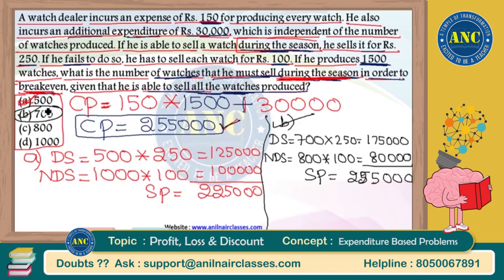The answer is 700 watches. In practice, solving by checking answer options takes much less time than it took to explain here. These questions look difficult but do not assume they are difficult — if you do, you will definitely lose an easy question.